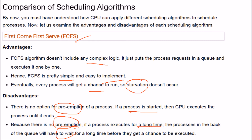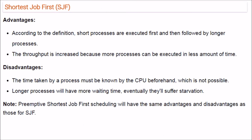For Shortest Job First: shorter jobs are executed first, increasing throughput since more processes complete in less time. The disadvantage is that the CPU cannot know beforehand how long each process will take, and longer processes suffer starvation as they keep getting deprioritized. Preemptive SJF has similar advantages and disadvantages.